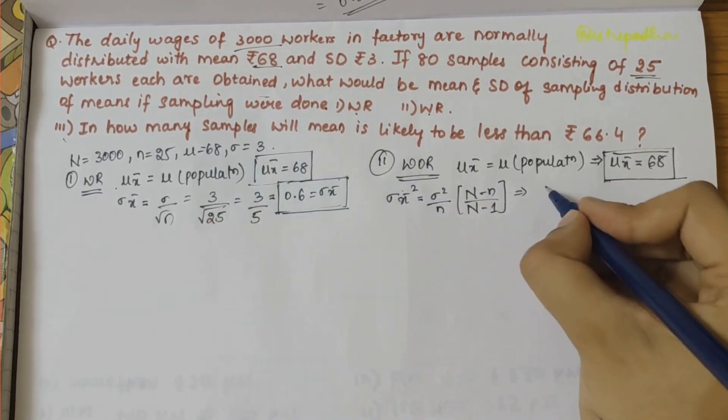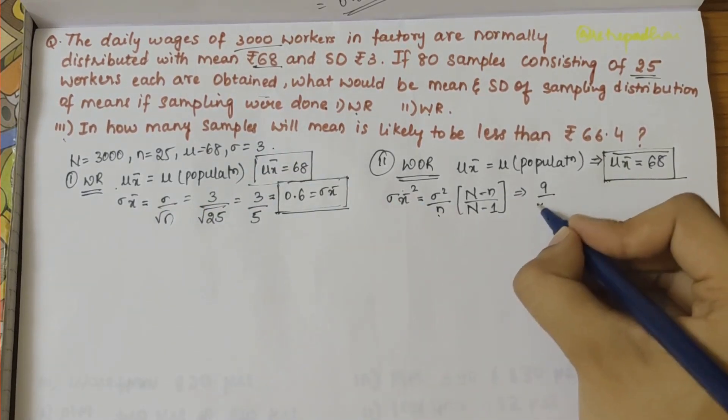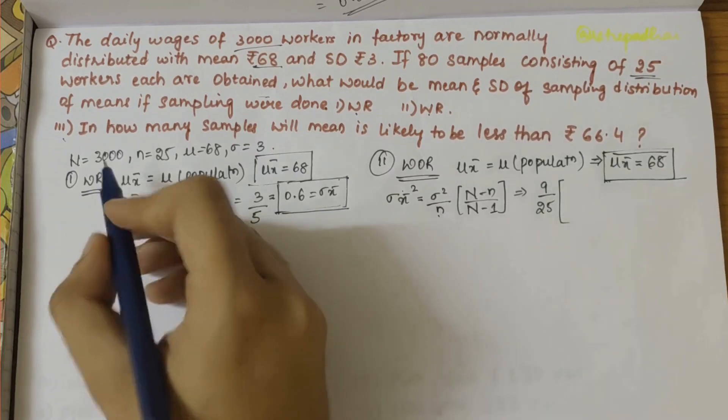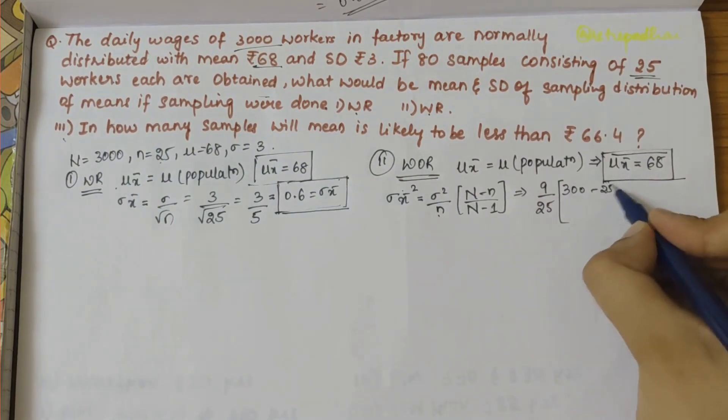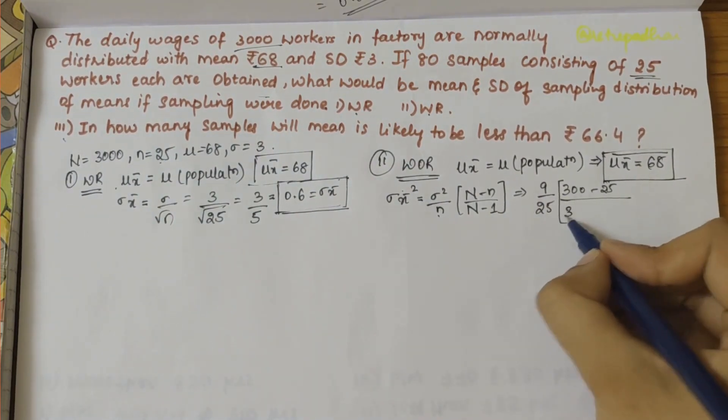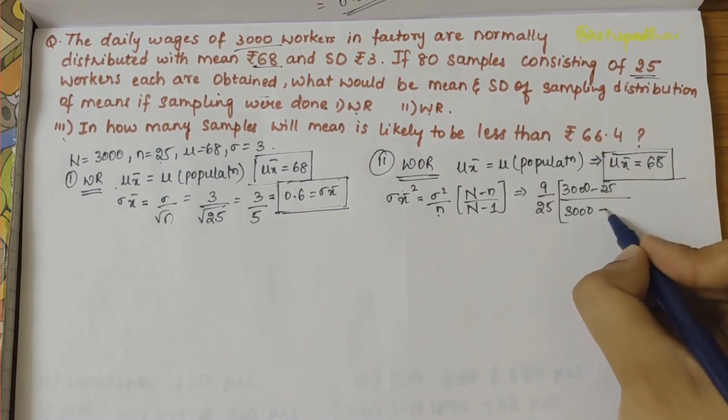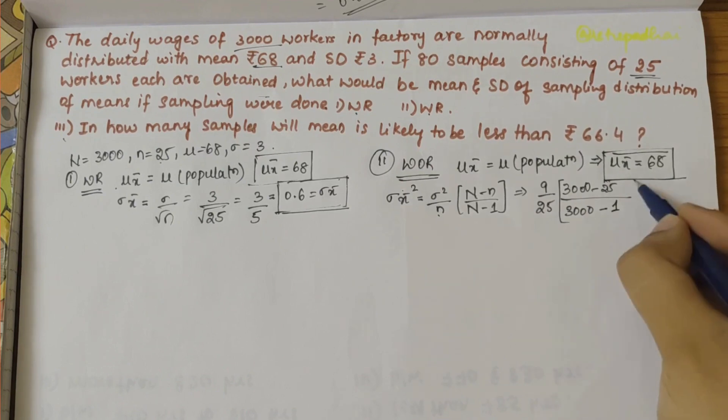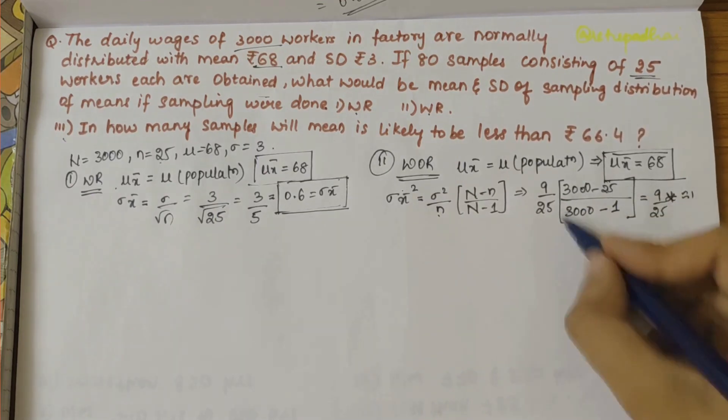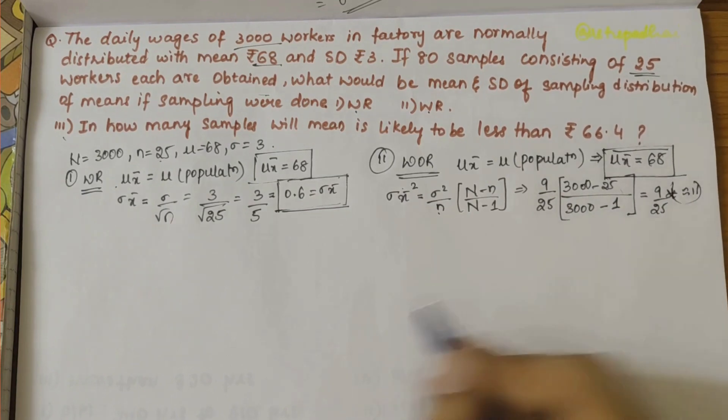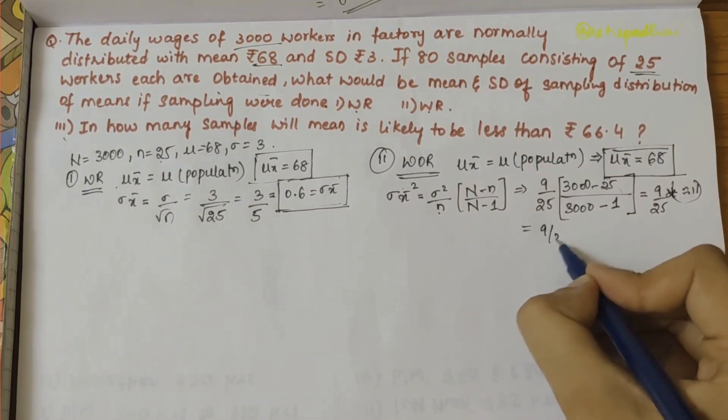So here it would be 3² = 9, n value is 25, capital N is 3000 minus small n is 25, and here capital N is 3000 minus 1. If you solve this, 9/25 times, we can approximate this as 1.